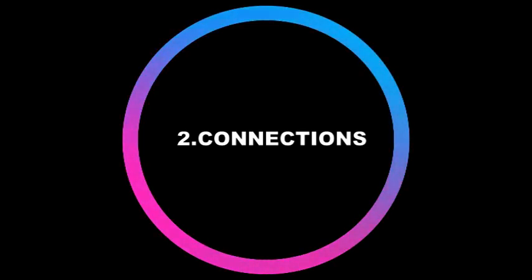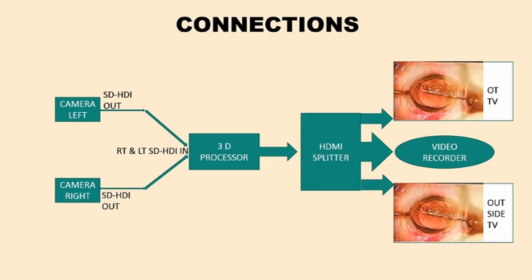Now let's see how to do the connections. The first component is the camera, which you attach to the beam splitter and C-mount on a video adapter, then take the SD-HDI cables out and feed them to the proper sides — right and left — of the 3D processor from AJA. From this you get an HDMI output, which goes to the HDMI splitter. There are four outputs: two for TVs, one for a video recorder, and one spare.